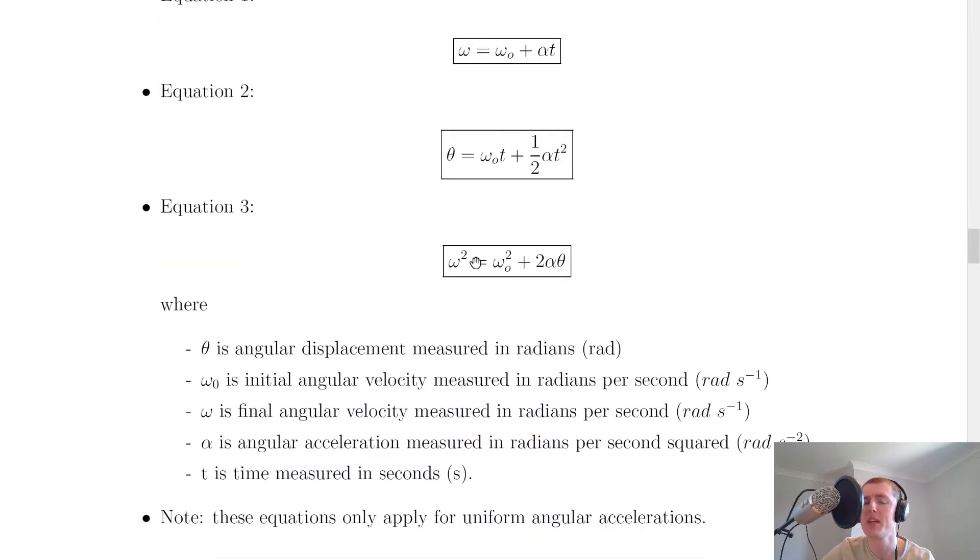And then equation three says that omega squared equals omega naught squared plus two alpha theta, and this means that the final angular velocity squared is equal to the initial angular velocity squared plus two times the angular acceleration times the displacement.